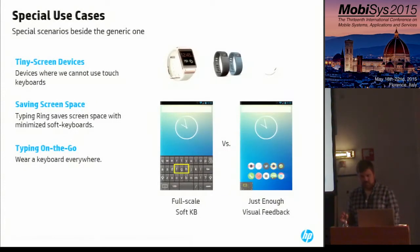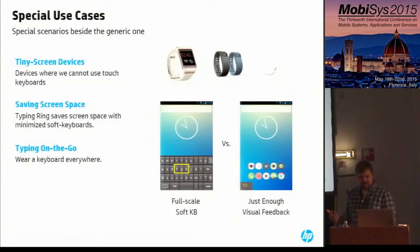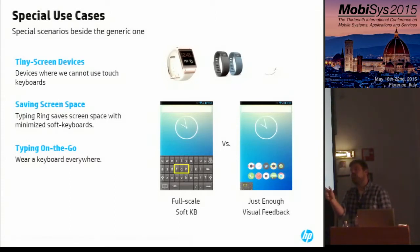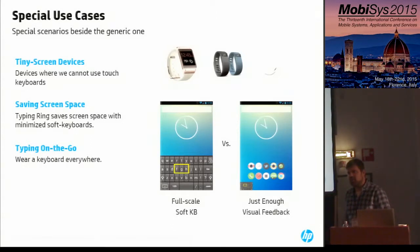Typing Ring can be used with a variety of computing devices that support standard external wireless keyboards. Some computing devices like smart watches and smart wristbands have very small screens where a full-scale touch-enabled keyboard isn't really an option — sometimes your finger will almost take up the entire surface area of the screen. Typing Ring physically separates the typing action from the visual feedback, so the keyboard layout can be scaled down to just show a tiny keyboard with highlighted keys, a single row of keys, or only the current active window. Also, typical on-screen soft keyboards on mobile devices block out more than 40% of the display when active, and by using this ring you can diminish that on-screen keyboard to just the highlighted region.